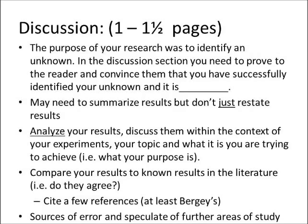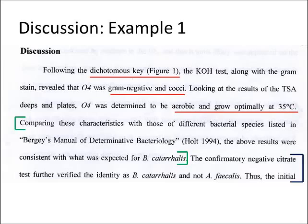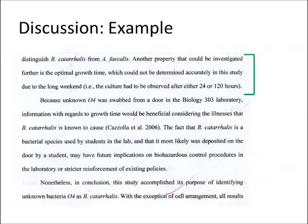This is also a chance to look at sources of error, or to speculate on potential future studies. Taking a look at an example discussion section, the results and referencing the dichotomous key are underlined in red. In the green section, we see what the results ultimately lead to — naming what the unknown most likely is. The blue section shows the confirmatory test and goes further than just what the results say, interpreting it and explaining that it's B. catarralis and not A. faecalis. The next example shows what a future studies sentence would look like.